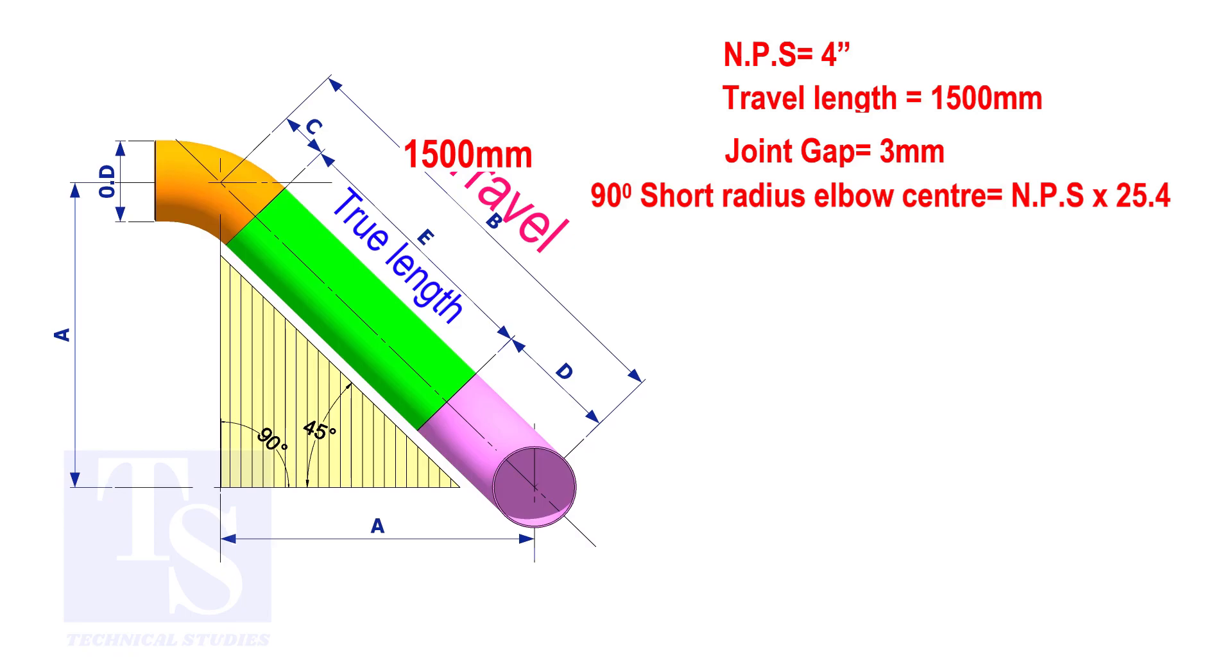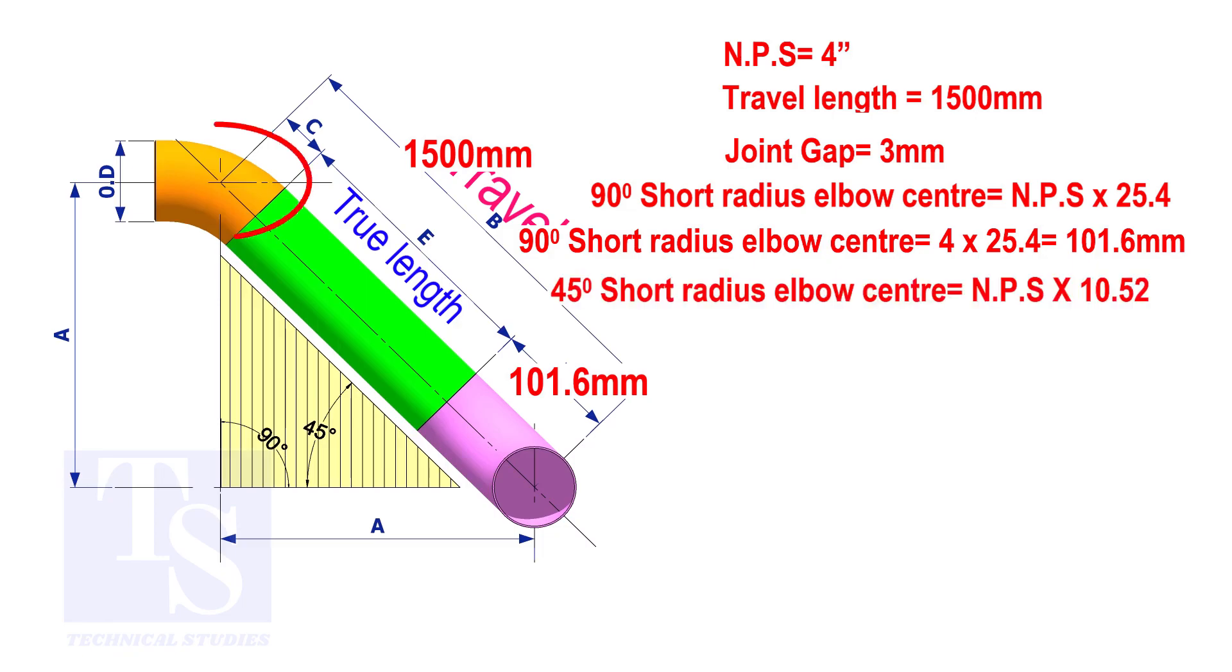To calculate the elbow center of a 90 degree short radius elbow, multiply the nominal pipe size by 25.4. The answer is 101.6 millimeters. To calculate the elbow center of a 45 degree short radius elbow, multiply the nominal pipe size by 10.52. The answer is 42.1 millimeters.